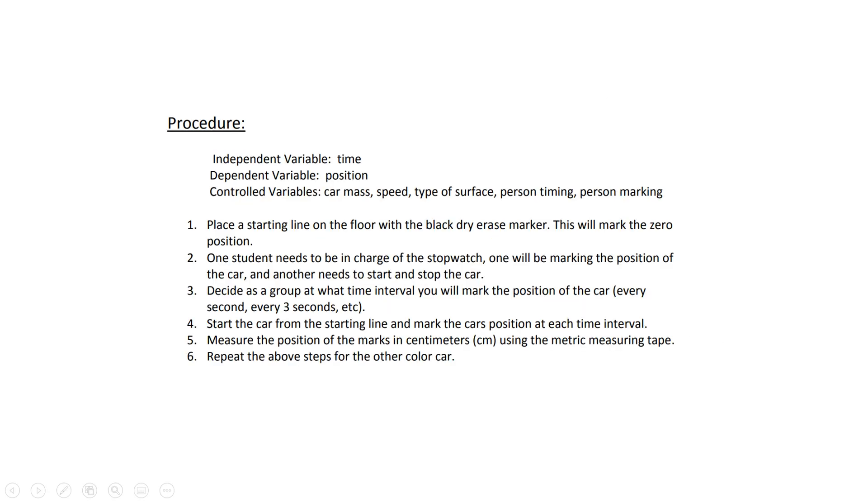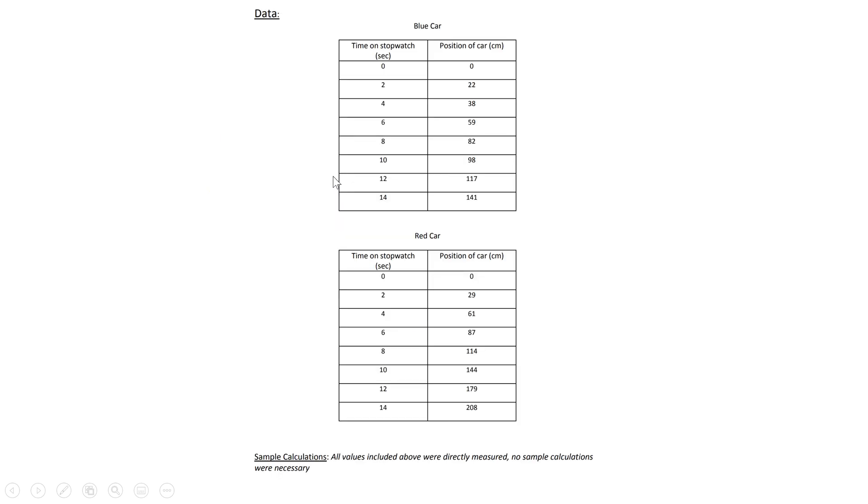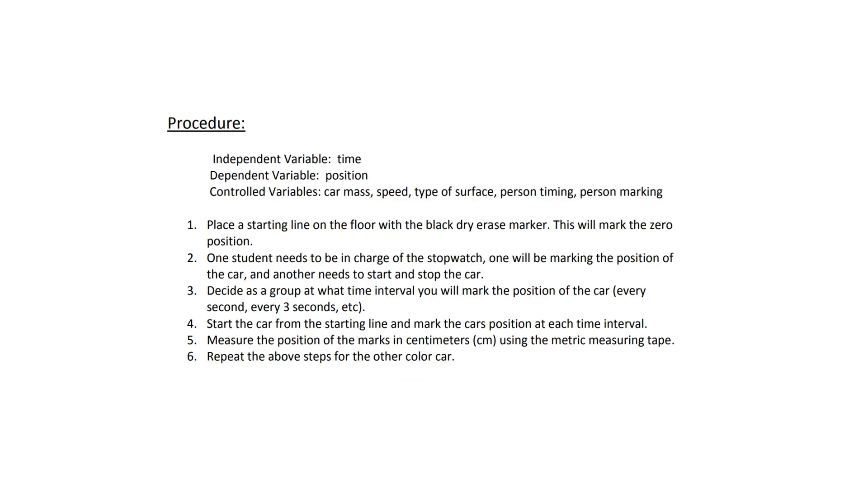The procedure. So sometimes I give you a written procedure and you can just rewrite that for your lab report. But if you want to you can kind of summarize or write from memory. But you do need to always have the independent and dependent variables listed along with control variables in the procedure part. So like for the toy car lab the dependent variable is always the y-axis and the independent variable is the x-axis. So we have position for the dependent and time for the independent. Then we controlled things like the car's mass didn't change. It was going constant speed so that's kind of controlled and it was only on one surface. You have the same person timing that sort of thing.